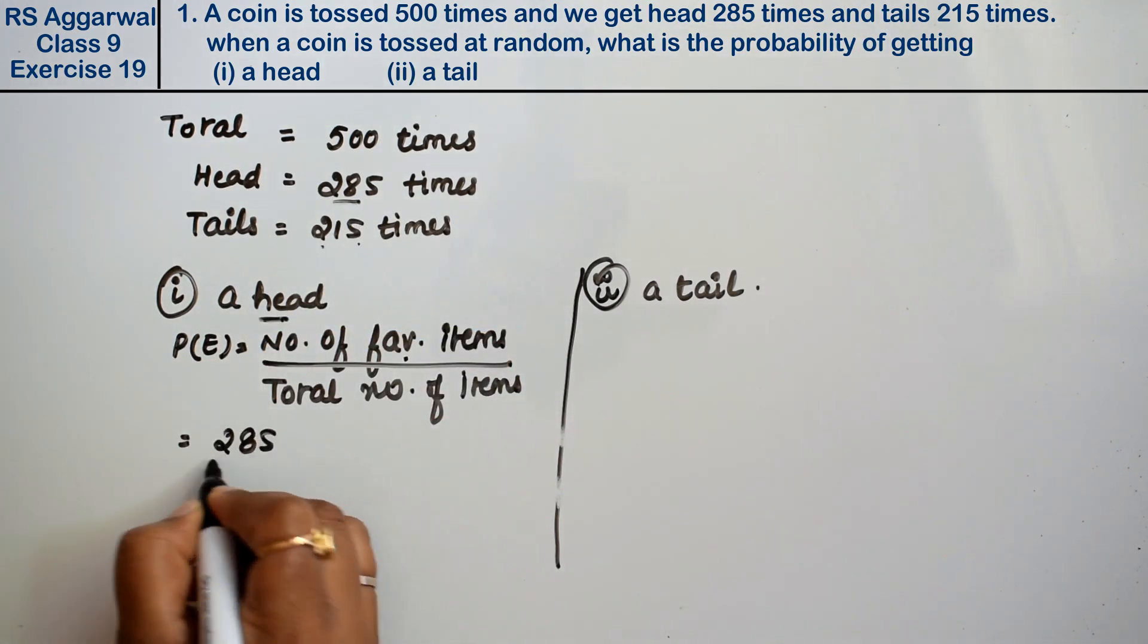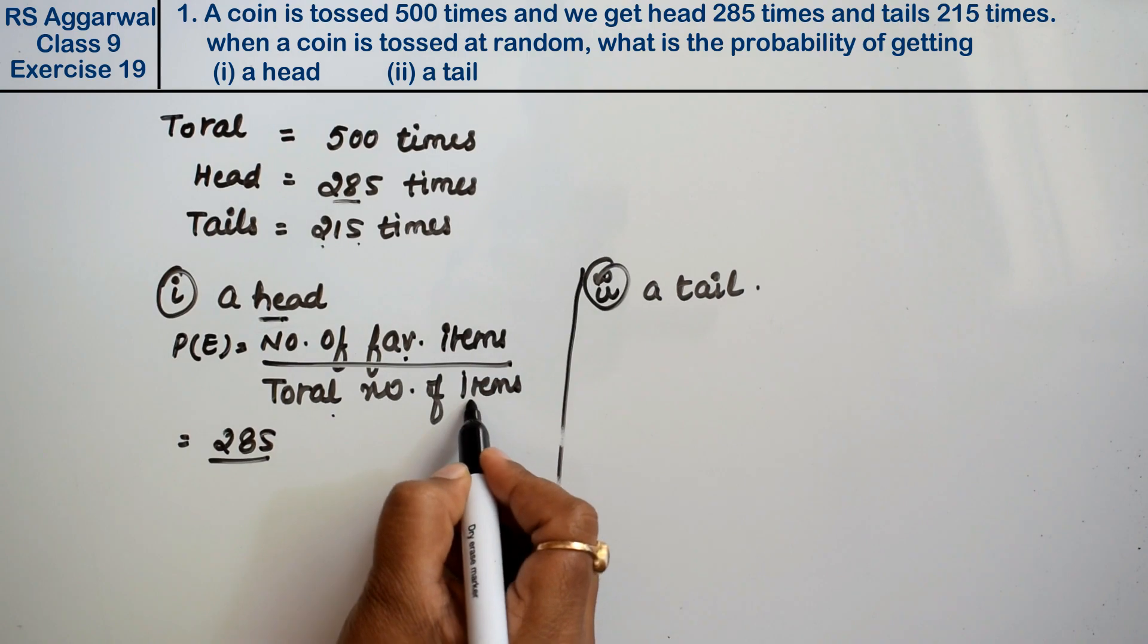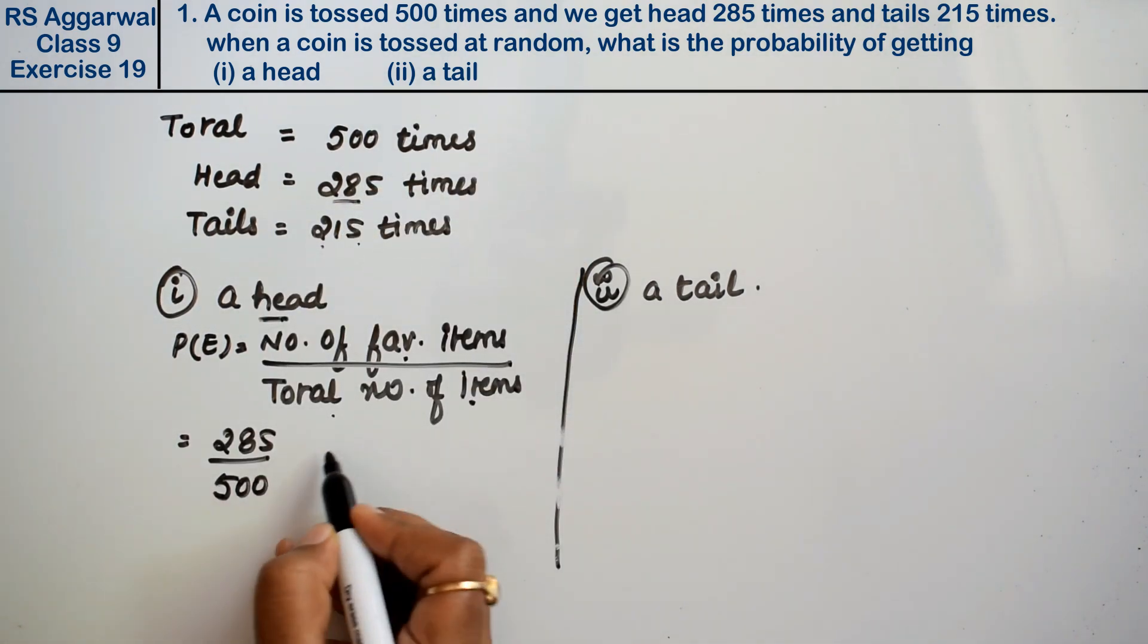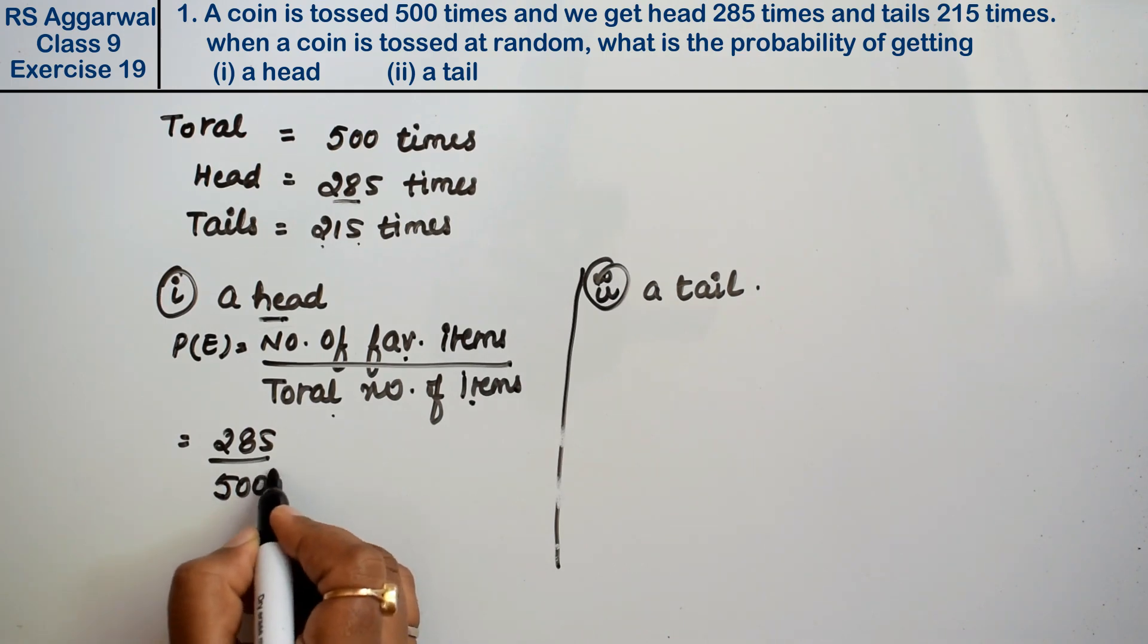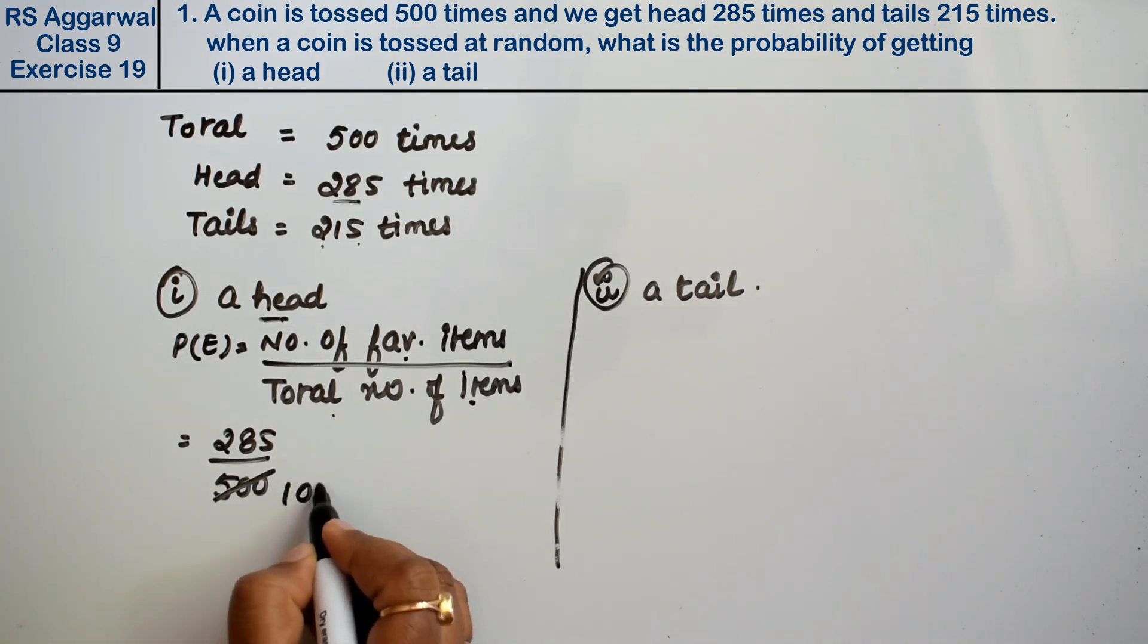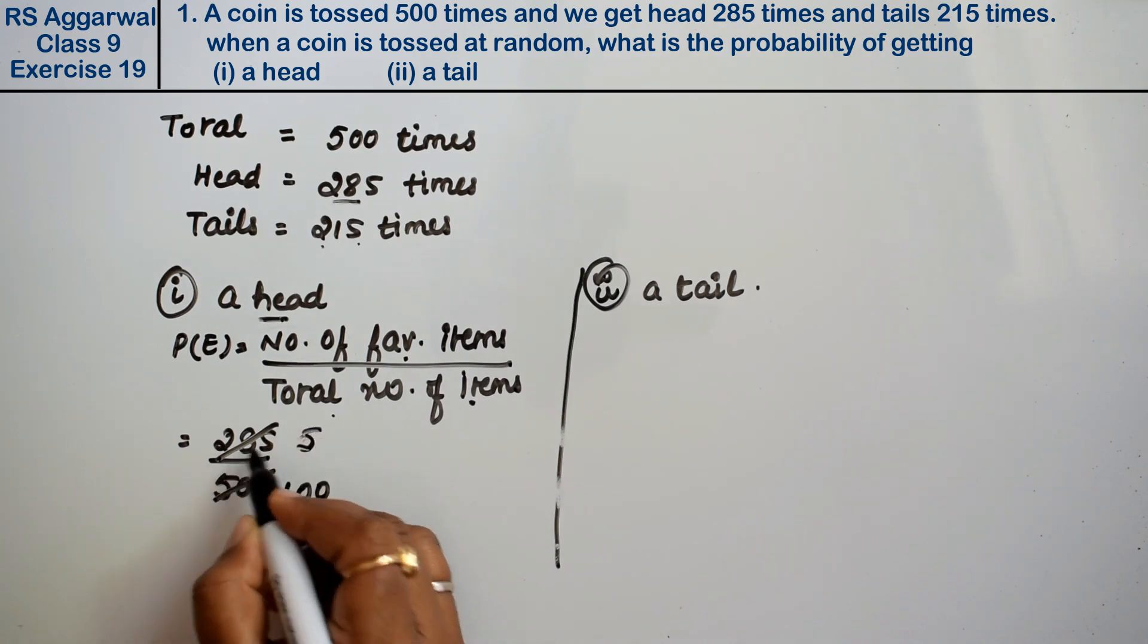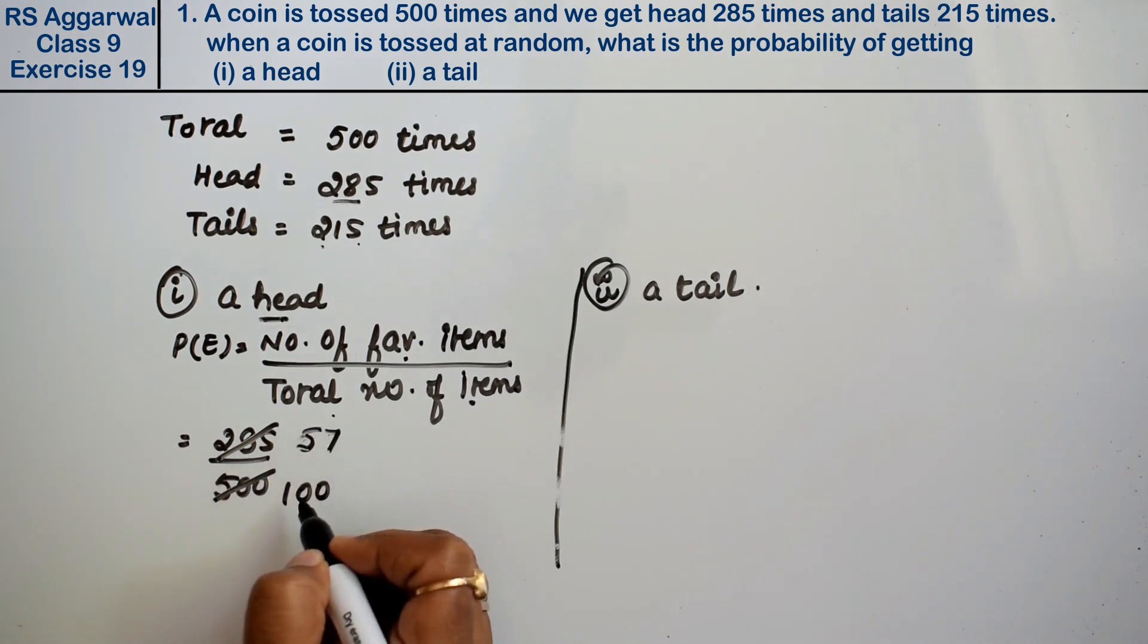And total number of tosses is 500. Now you can reduce this: 5 goes into 285 giving 57, and 5 goes into 500 giving 100. So it's 57 upon 100, and what do we call this? 0.57. So the probability is 0.57.